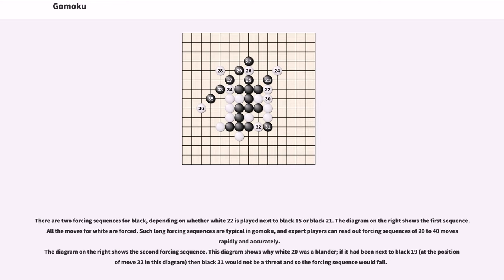There are two forcing sequences for black, depending on whether white 22 is played next to black 15 or black 21. The diagram on the right shows the first sequence. All the moves for white are forced. Such long forcing sequences are typical in Gomoku, and expert players can read out forcing sequences of 20 to 40 moves repeatedly and accurately.